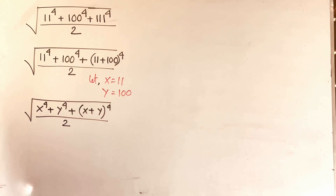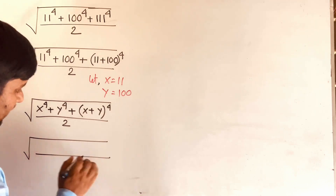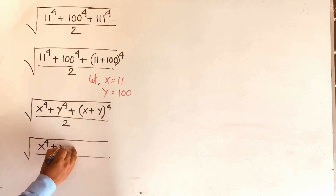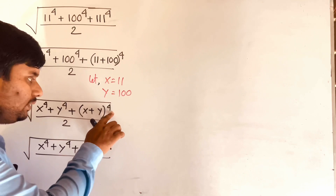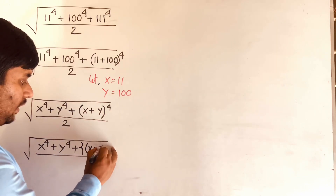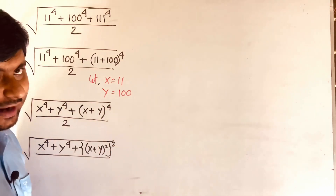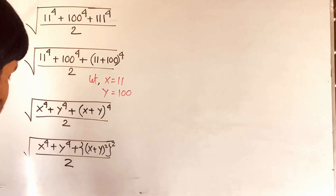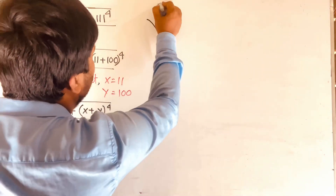Then what can I do? I can see easily it will be square root of x to the power 4 plus y to the power 4. But in this case the exponent is 4, so it will be (x plus y) whole squared, and whole to the power 2 — since 2 times 2 equals 4, according to exponential rules — then over 2.